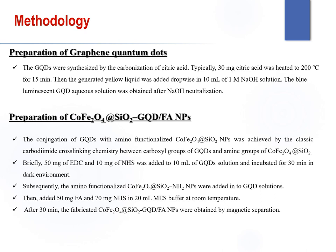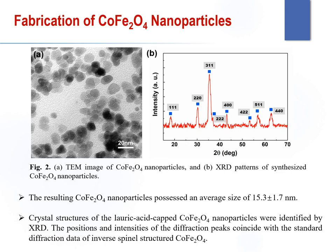The conjugation of GQDs with amino-functionalized cobalt silica nanoparticles was achieved by classical carbodiimide crosslinking chemistry between the carboxyl groups of GQDs and the amine groups of cobalt silica nanoparticles. Briefly, 50 mg of EDC and 10 mg of NHS were added to 10 ml of GQDs solution and incubated for 30 minutes in a dark environment. Subsequently, the amino-functionalized cobalt silica nanoparticles were added to conjugate with GQDs, followed by adding 50 mg folic acid and 70 mg NHS in MES buffer at room temperature.